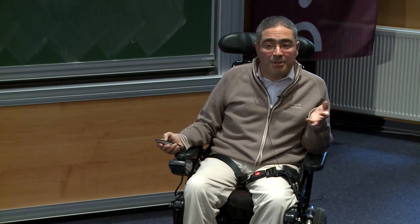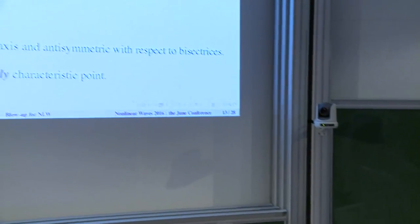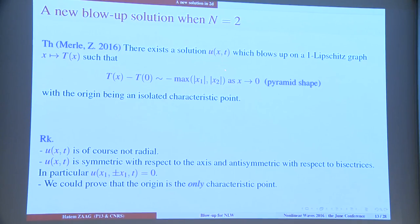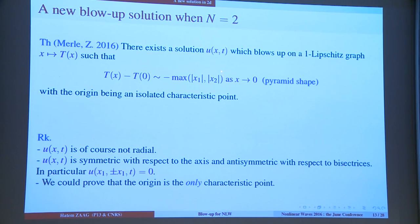The same question exists for the semi-linear wave equation, but here the good notion of singular set is that of characteristic points, because near non-characteristic points the situation is at least in one space dimension completely understood. The corresponding question is: can we have a solution where the set of characteristic points is a cross? That was our initial thought. And this is the theorem — we could not answer that question, but at least we came out with a new solution.